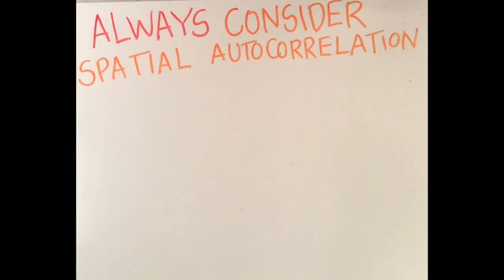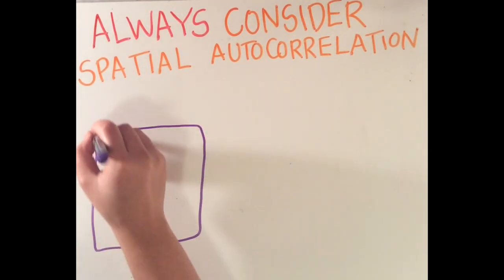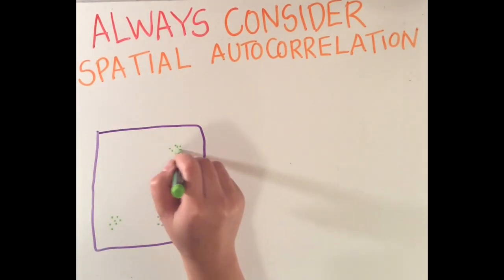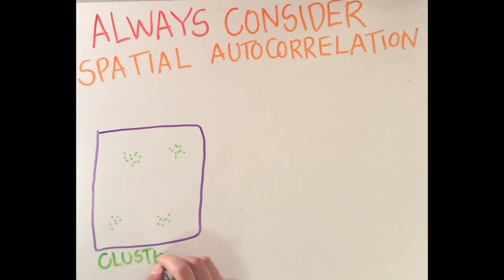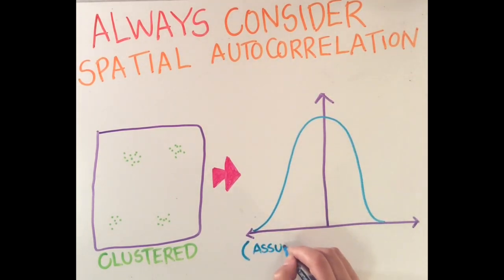Sometimes, though, spatial autocorrelation can actually interfere with data processing. Many important statistics assume that all data is randomly distributed, and having internal relationships between the data can cause non-negligible interferences in modeling behavior and calculating important statistics in the dataset.